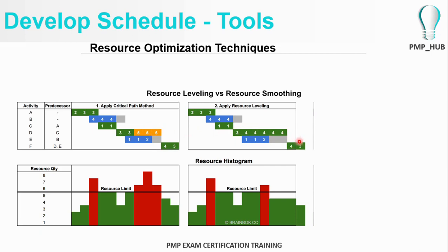Note that the project schedule has shifted because of resource leveling. You can also observe from the original schedule that there is a float period, which signifies that this activity is not on the critical path.